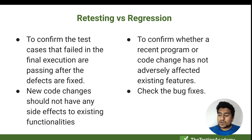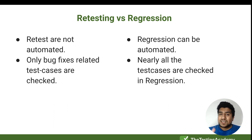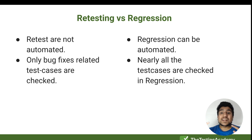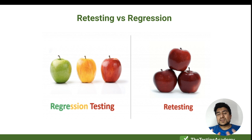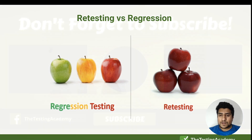Most retests are not automated, whereas regression can be automated. In retesting we are only testing the specific bug fixes, whereas in regression nearly all test cases are checked. Regression testing covers all the different modules you have, while retesting covers only the specific module where the bug was found.